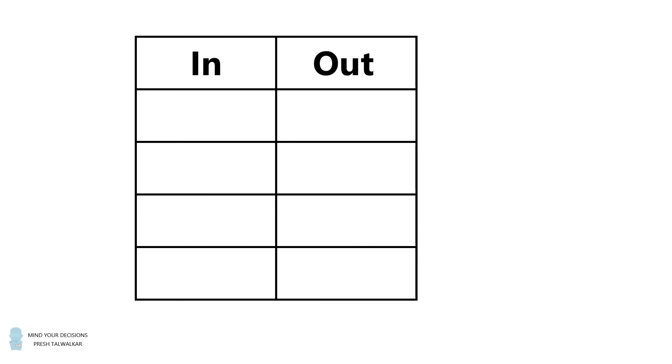Hey, this is Presh Talwalkar. A table lists a series of inputs and outputs. The input of 1 goes to the output of 5, 2 goes to the output of 10, 3 goes to the output of 55. For the input value of 10, what is its output value and what is the rule between the inputs and outputs?